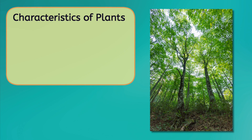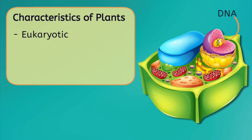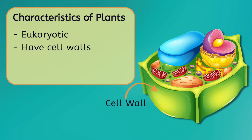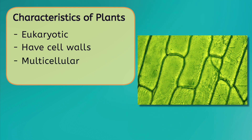These characteristics are as follows. All plants are eukaryotic, which means plant cells store their DNA in a nucleus. Additionally, plant cells have cell walls, which are rigid structures that help cells keep their shape. Plants are multicellular, which means they are made of many cells put together.